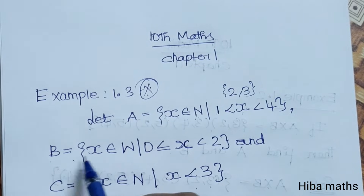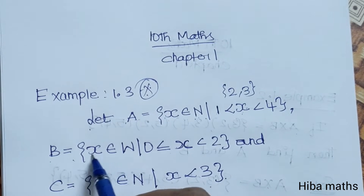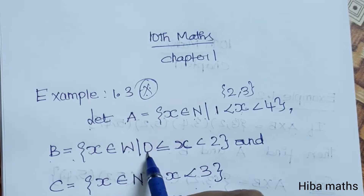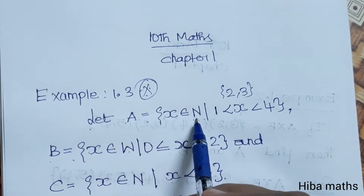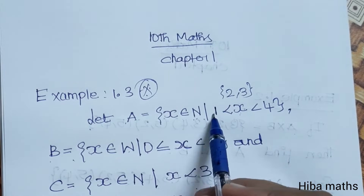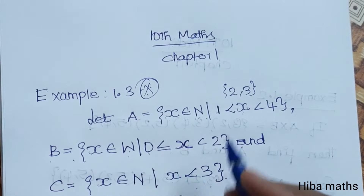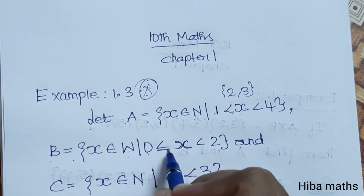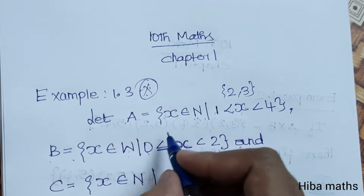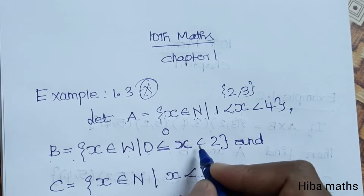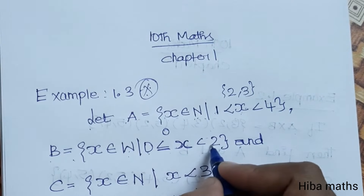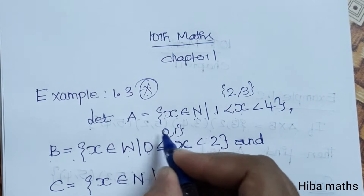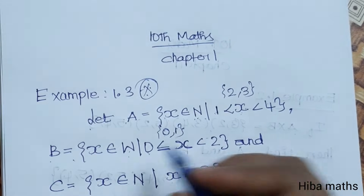Let B be equal to x, where x is an element of whole numbers. Whole numbers start with 0, whereas natural numbers start with 1. So x is greater than or equal to 0 and less than 2, meaning x can be 0 or 1. So B = {0, 1}.